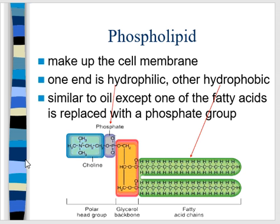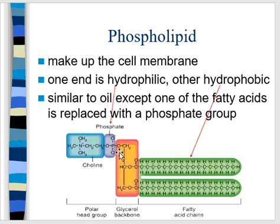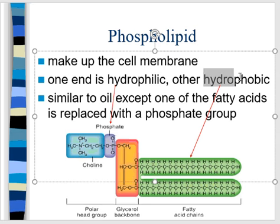Previously we mentioned phospholipids in the cell membrane structure — the phospholipid bilayer. Here is the glycerol backbone, but instead of having three fatty acids and a glycerol, you have two fatty acids and a phosphate group — that's what makes this a phospholipid. The phosphate is polar, meaning it can dissolve in water, but fatty molecules are nonpolar so they don't dissolve in water. So one end is hydrophilic — it likes water — and the other end is hydrophobic — it does not like water or mix with it.